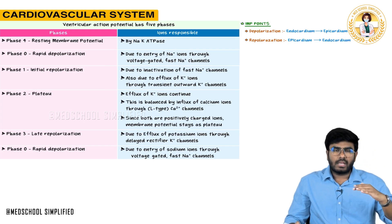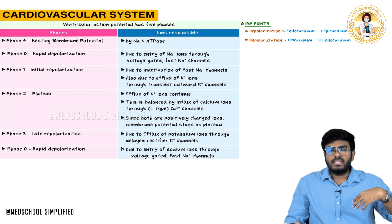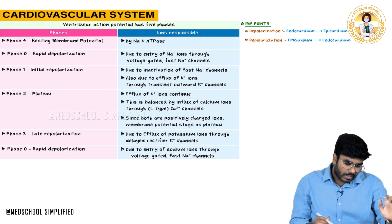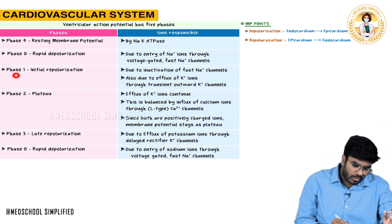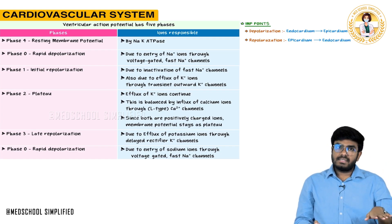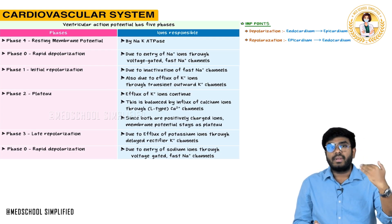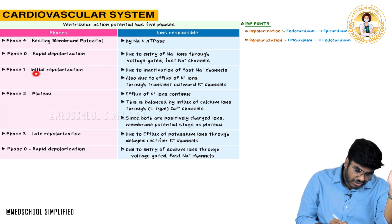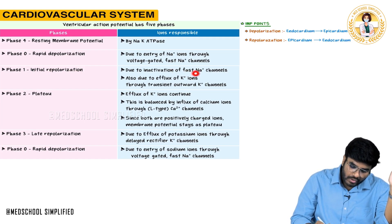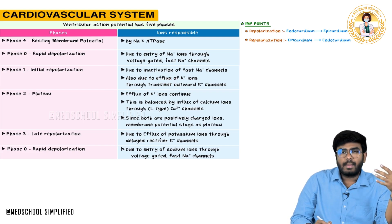Sodium coming into the cell moves the resting membrane potential from minus 90 to plus 20 or even plus 30. During phase 1, entry of sodium into the cell decreases and potassium efflux is happening, causing initial repolarization. This is due to inactivation of sodium channels, and potassium exits through transient outward potassium channels.